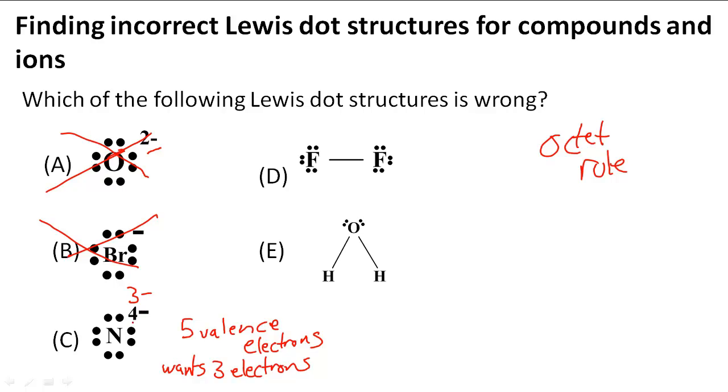Notice they did put eight valence electrons, which obeys the octet rule. But the charge is wrong - it's saying it gained four valence electrons, which is not true. It only gained three. So C is our answer, but let's check D and E.